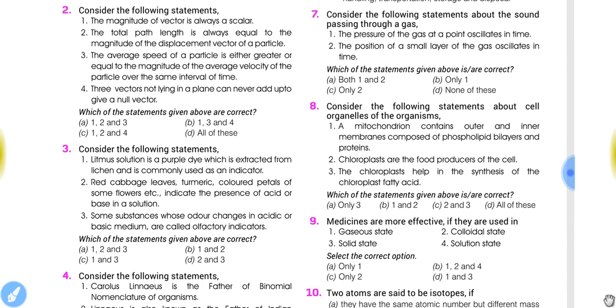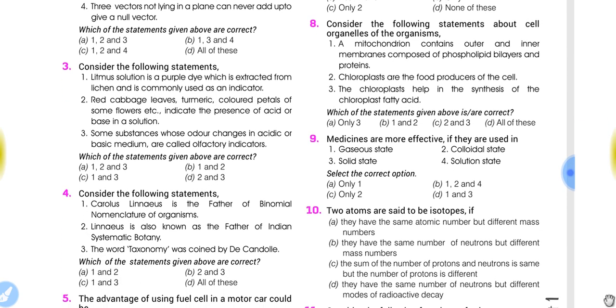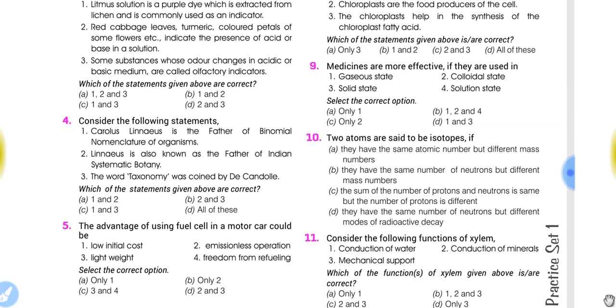Question number 4: Consider the following statements. Carolus Linnaeus is the father of binomial nomenclature of organisms. Linnaeus is also known as the father of Indian systematic botany. The word taxonomy was coined by De Candolle. The correct answer is statements 1 and 3 only, that is option C. Linnaeus is not the father of Indian systematic botany.